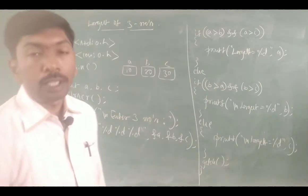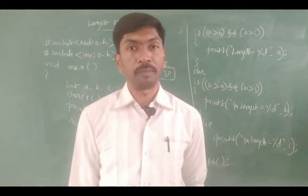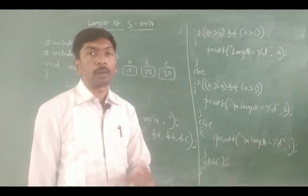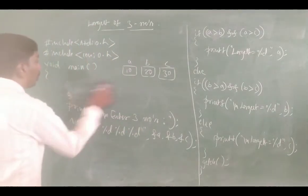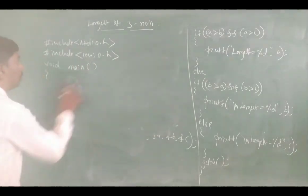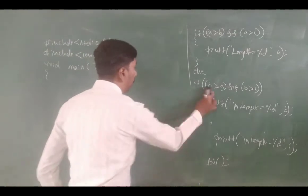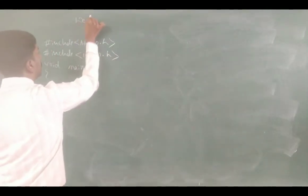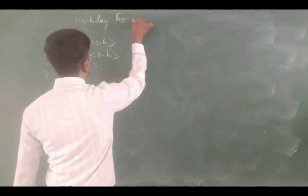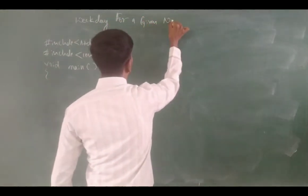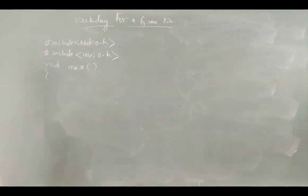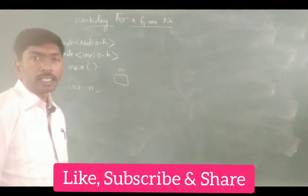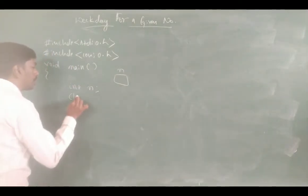Now let us check another program — to find the weekday for a given number. For numbers 1 to 7: 1 means Monday, 2 means Tuesday, 3 means Wednesday, 4 means Thursday, and so on for all seven days. We use the standard headers stdio.h, conio.h, and void main, and declare an integer variable n to accept the input.